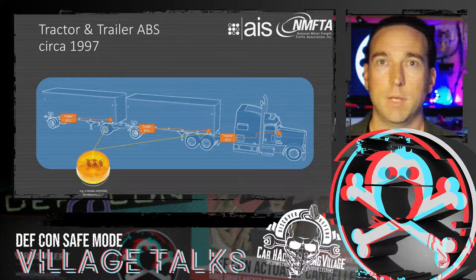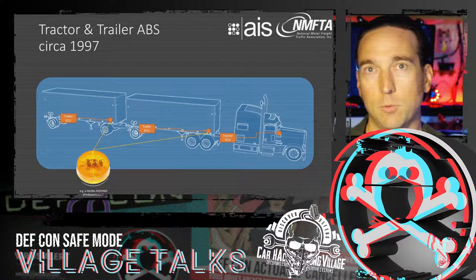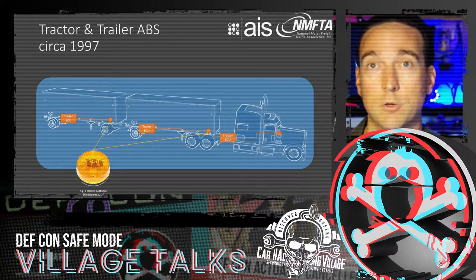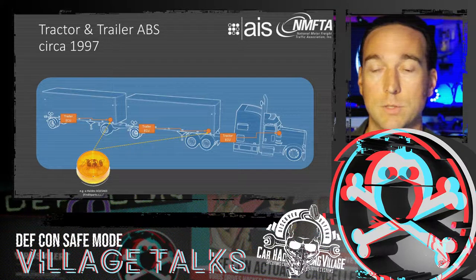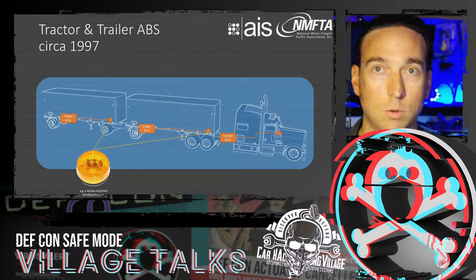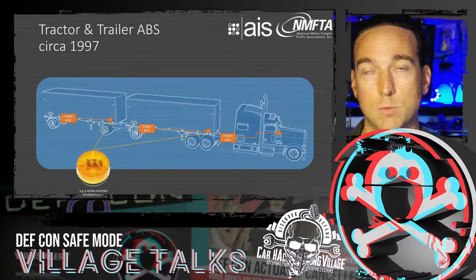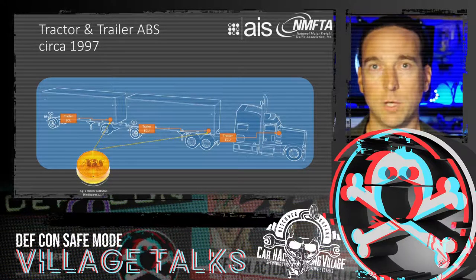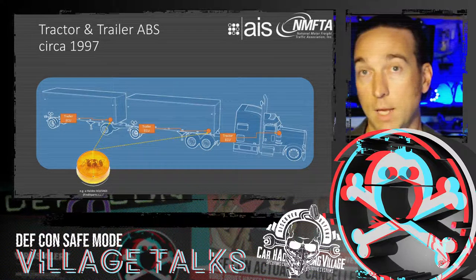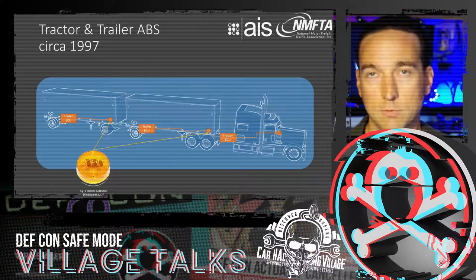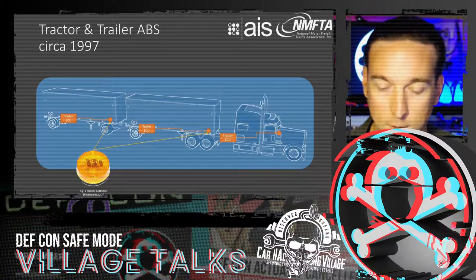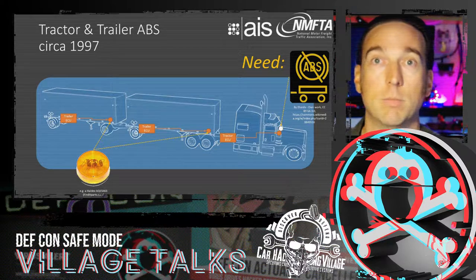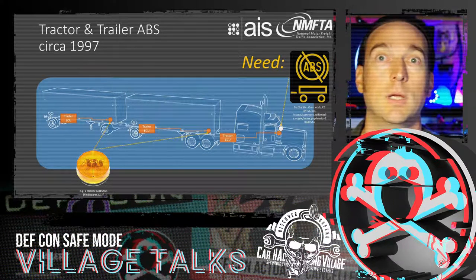Let's rewind the clock a couple of decades and look at trucks around 1997. There were anti-lock braking ABS systems on trailers and tractors, which are quite important to prevent rollovers and reduce braking distances — critical for safety. At the time, there was only a warning light on the side of the trailer showing if ABS was malfunctioning, but regulators and fleet safety managers wanted a dash display to alert the driver.